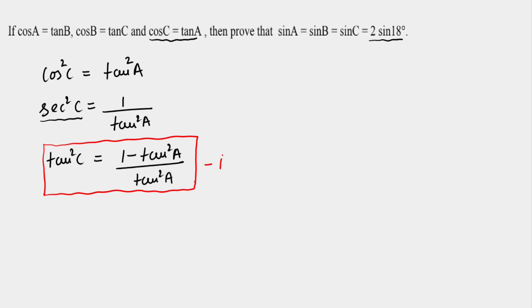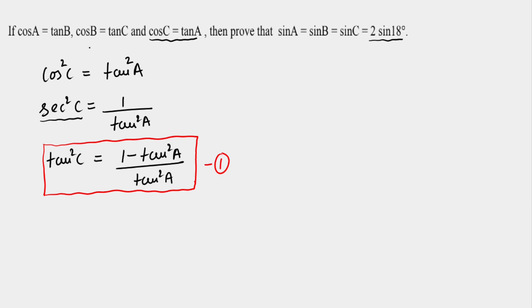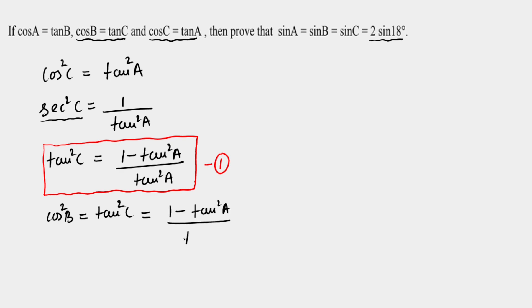Now let's start with the second equation: cos B = tan C. Squaring both sides, cos²B = tan²C. From the first relation, we already have tan²C in terms of tan A, that is (1 - tan²A) / tan²A. Now I am going to compare these two — first and last.